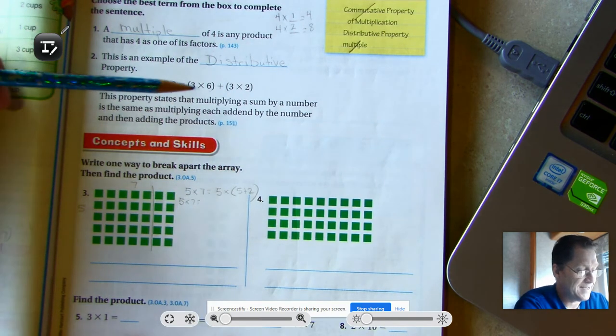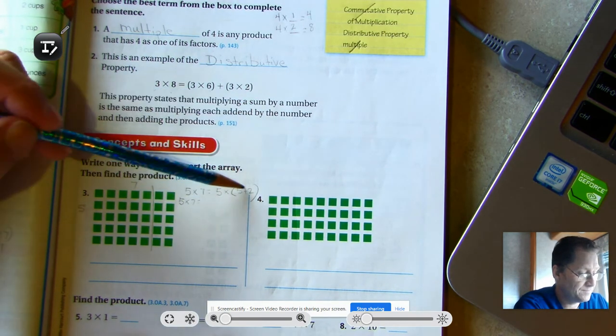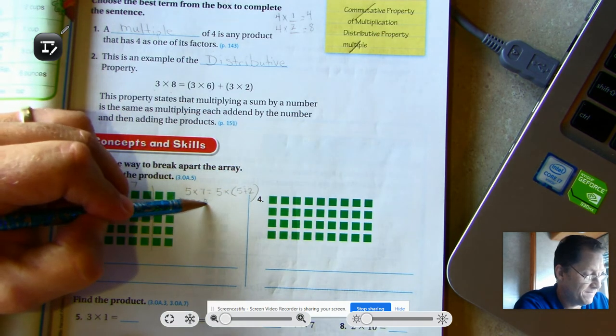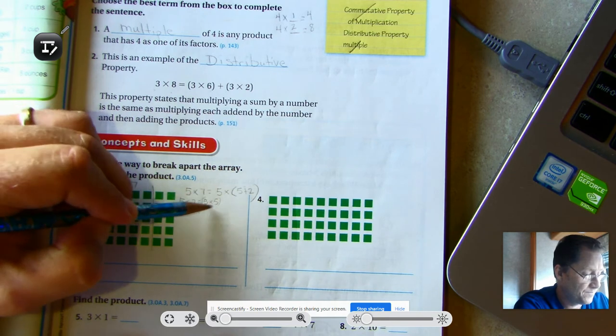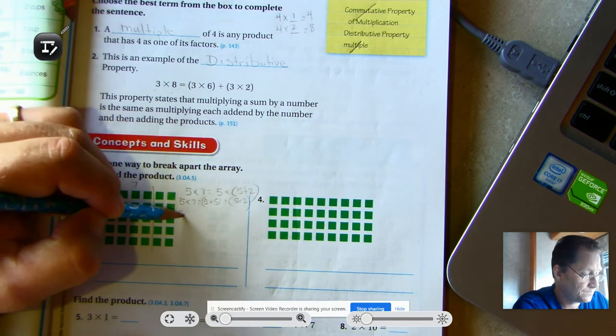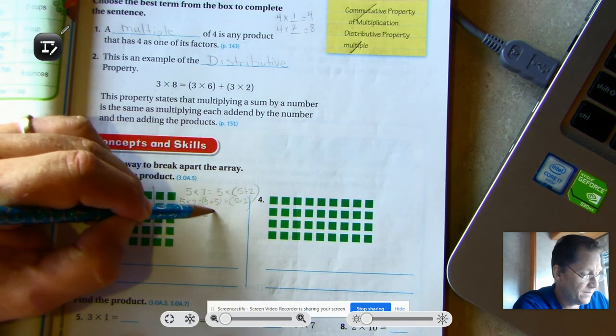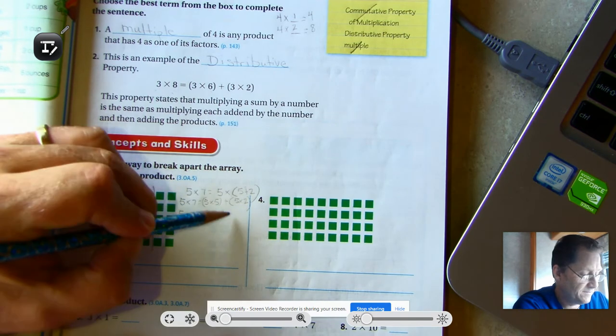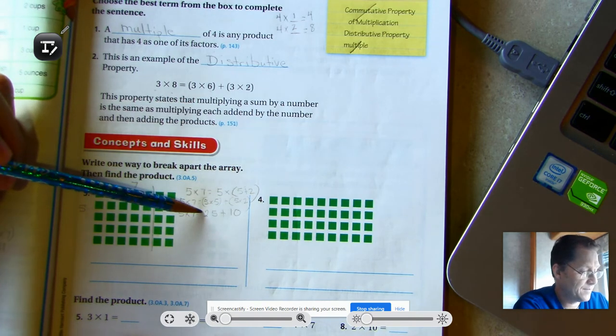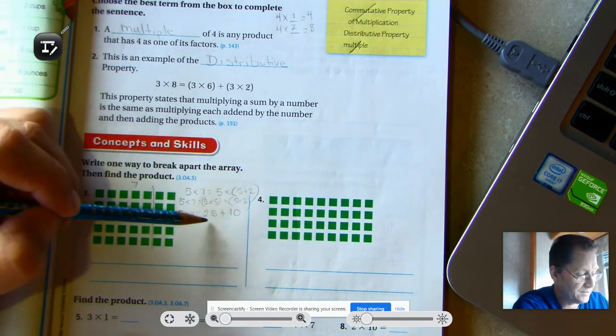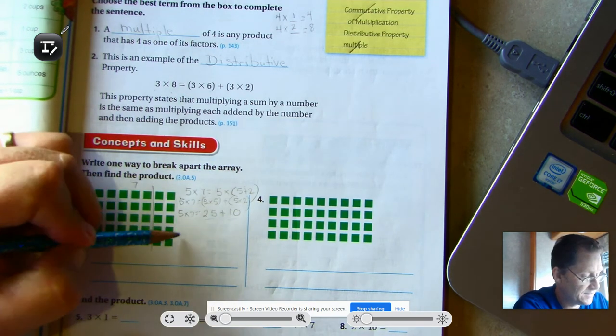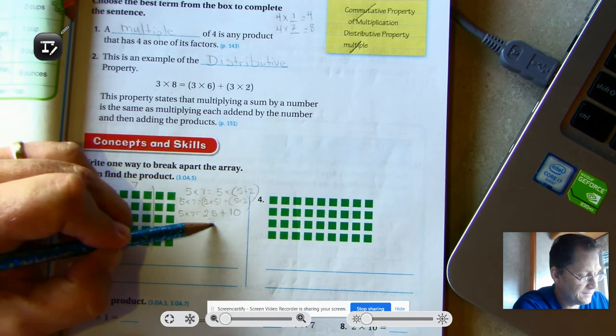So the distributive property says that multiplying a sum, the sum here, by a number is the same as multiplying each addend. Five times five plus five times two. Five times five, the product is 25 plus five times two, which is 10. The same as multiplying each addend, which we did, and then adding the products. The products of our two separate problems was 25 plus 10. So five times seven is 35.